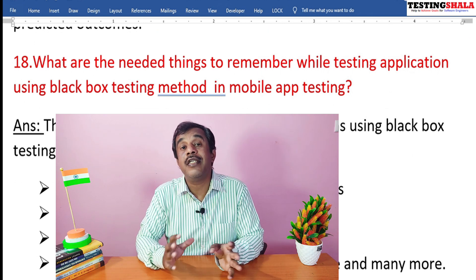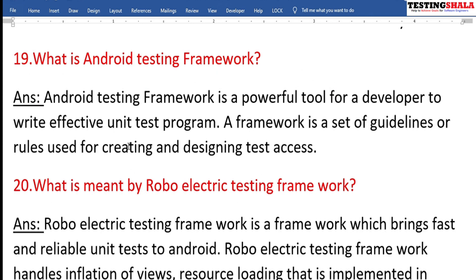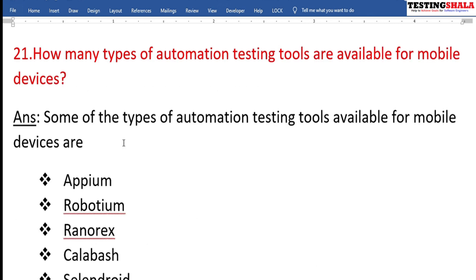What are the key things to remember while doing black box testing in mobile application testing? Interaction with the system through inputs should be accurate, the operations performed should be accurate, there should be no usability issues, and we should look for any test data challenges. The Android testing framework is a powerful tool for developers to write effective unit tests.